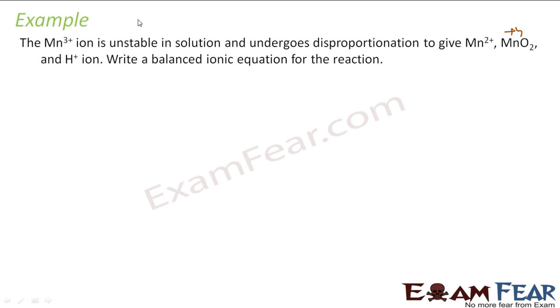So it says that I have Mn3+, it gives Mn2+ and also it gives MnO2 that is plus 4 and H+ ions. It is acidic, right? Just acidic. So instead of telling H+ ions you could have written acidic, both are same. We have to write the balanced ionic equation for this reaction. So let me try with the split method.